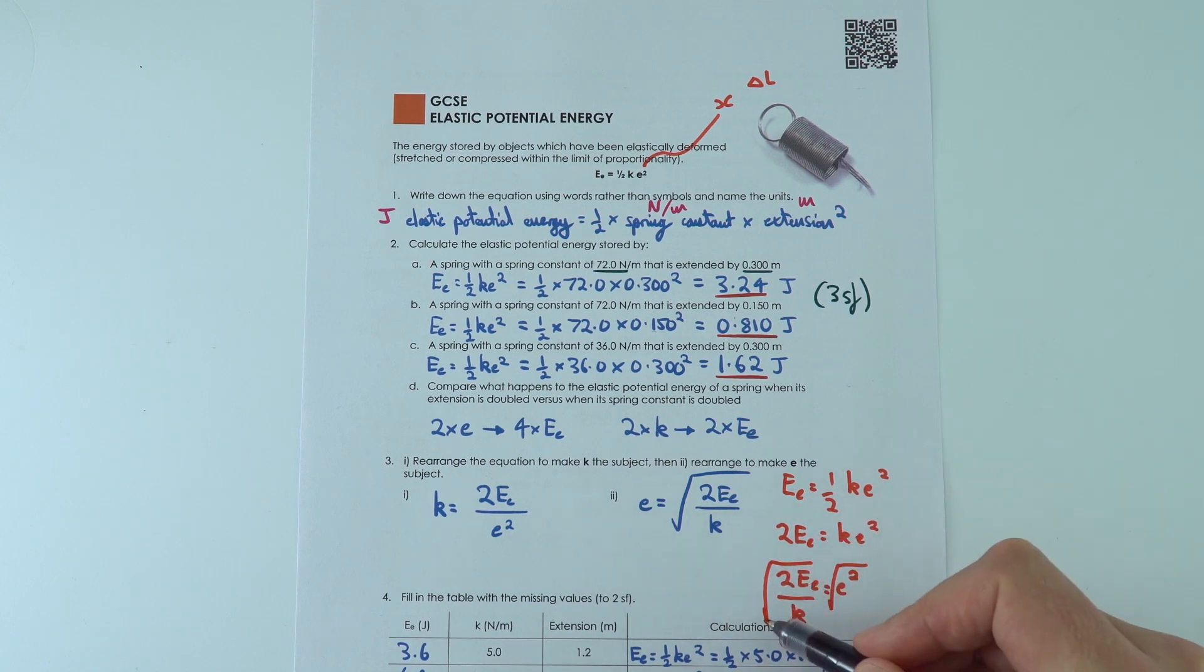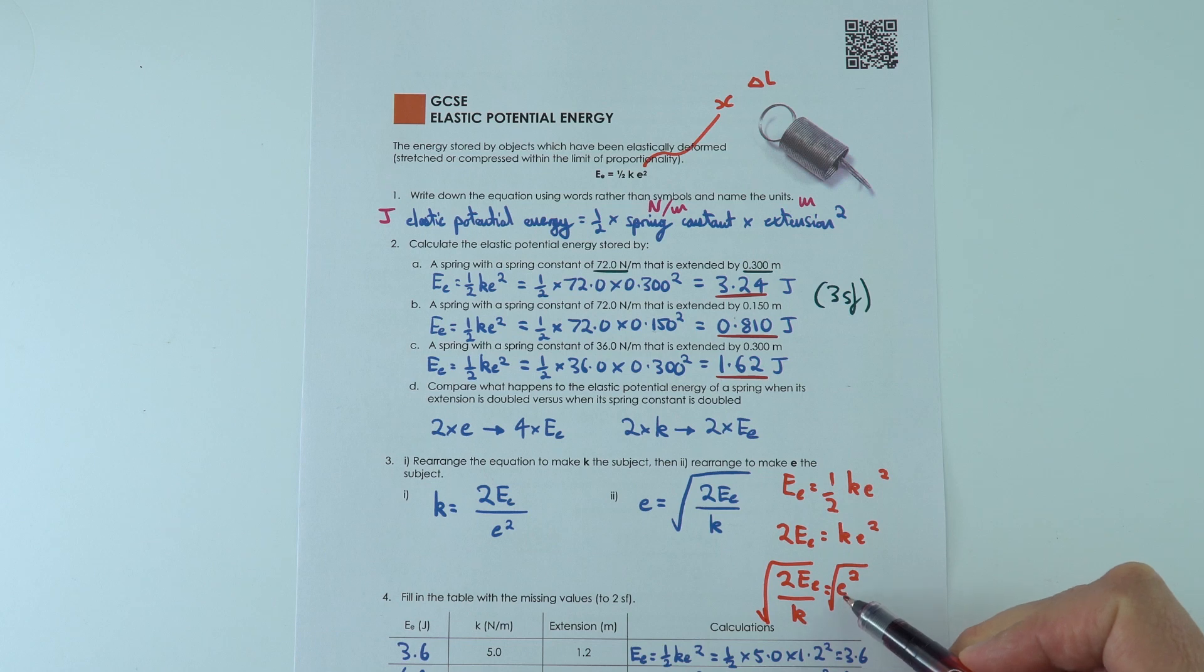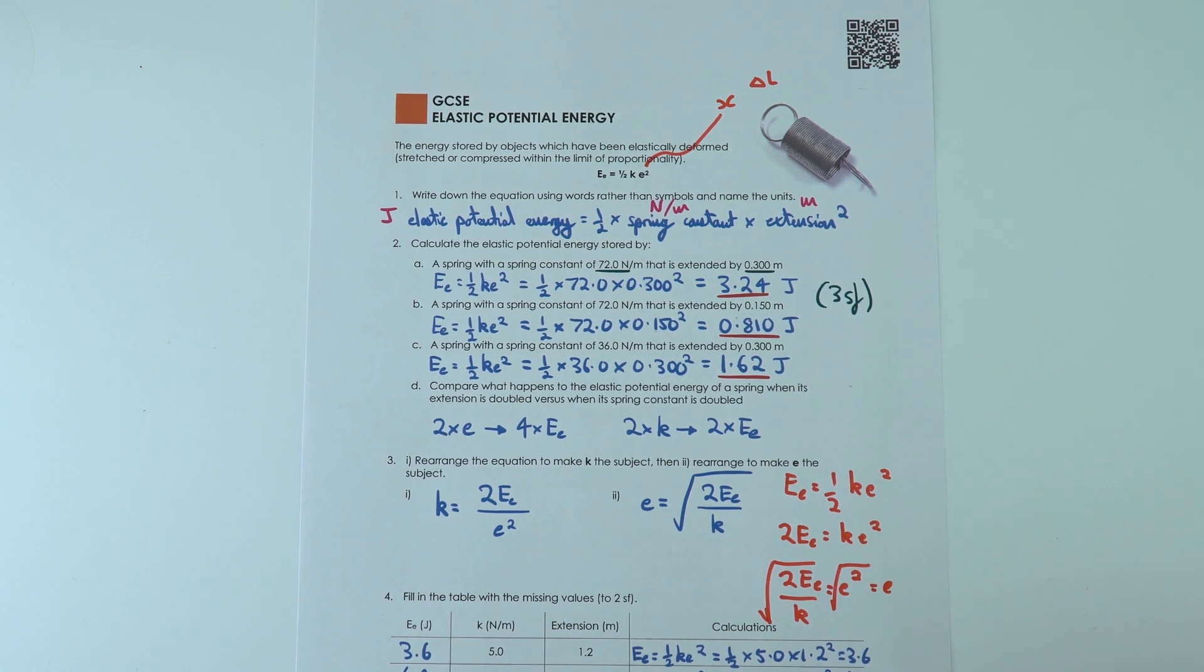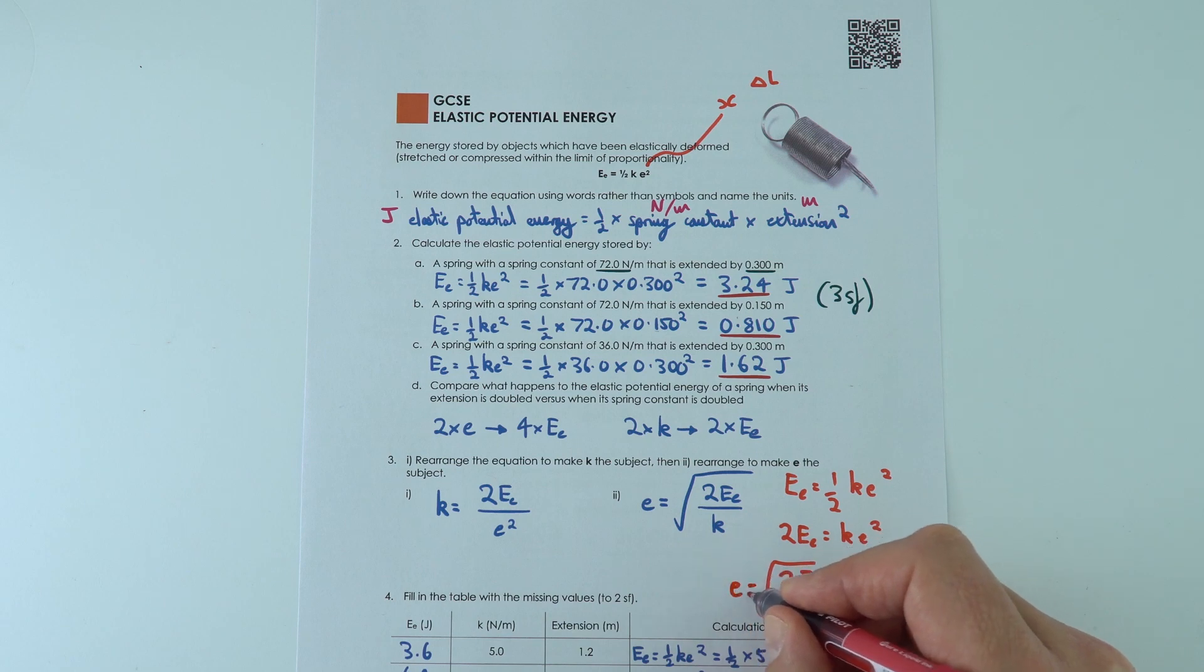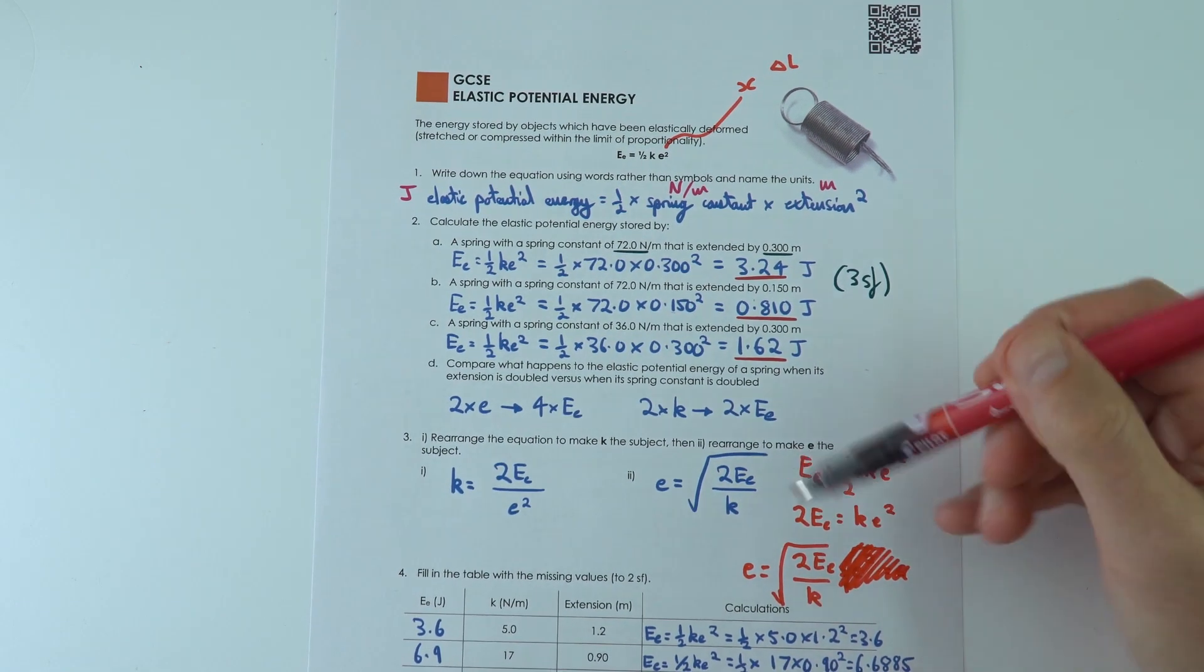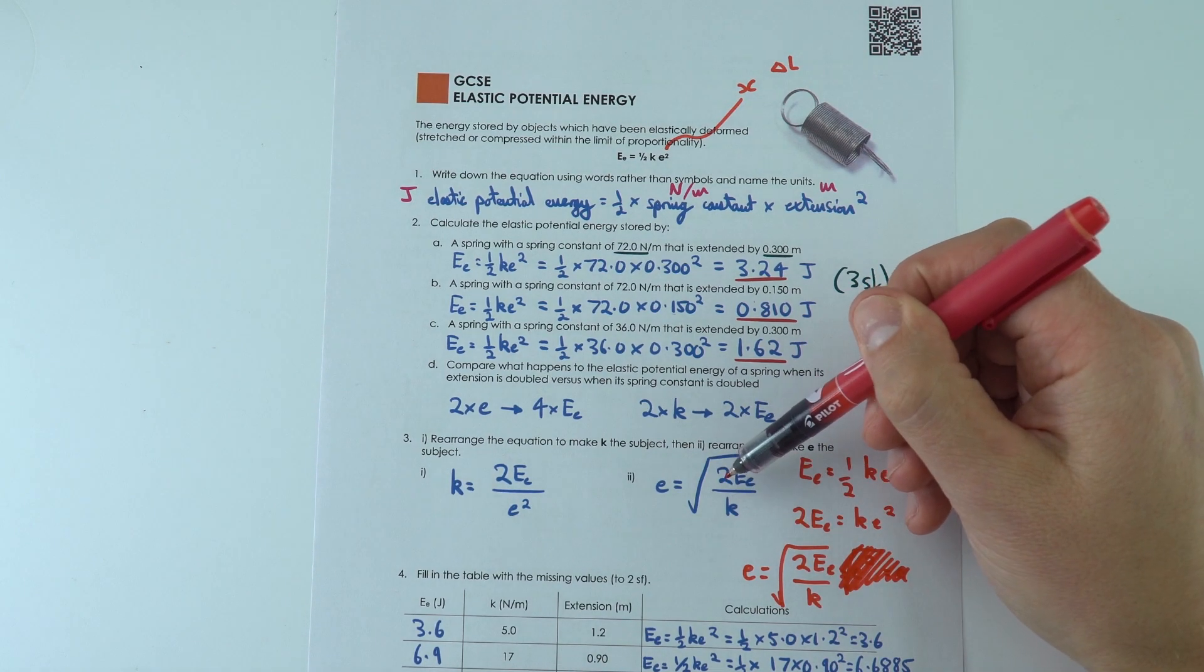And then if I square root both sides, we'd have the square root of e squared and we'd also have the square root of this. And the square root of e times e is just equal to e. And what we can then do is just put the e on the left hand side. I'm just going to get rid of that to make it neater, and that's why this is a way to rearrange that equation.